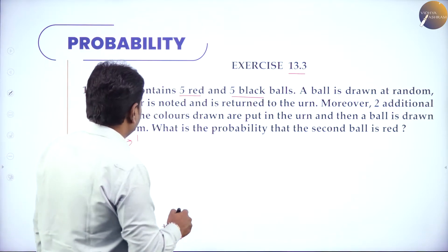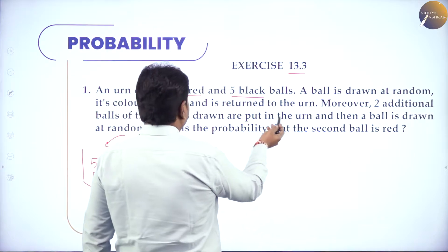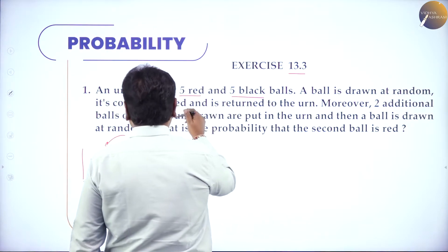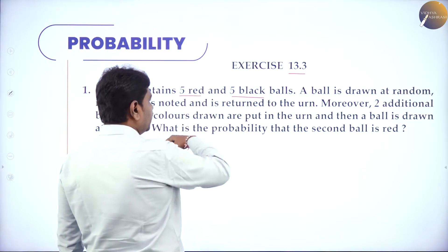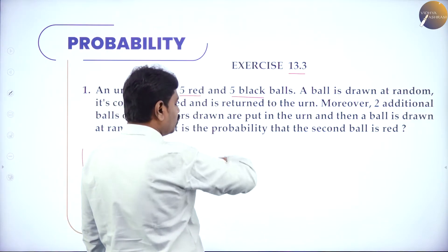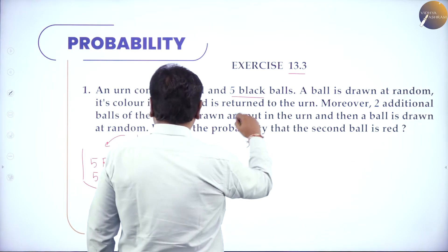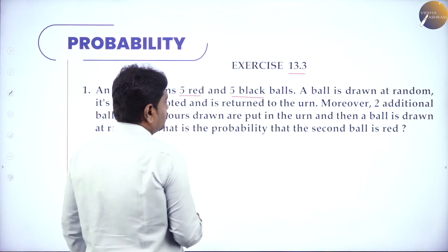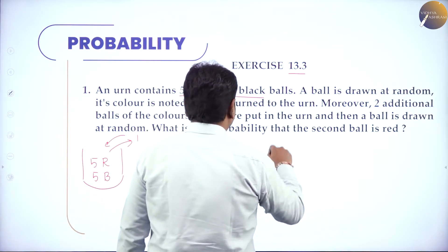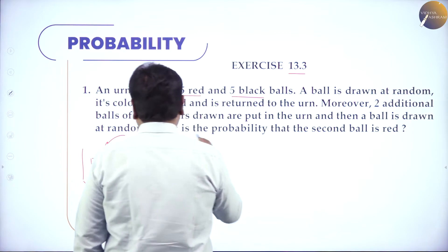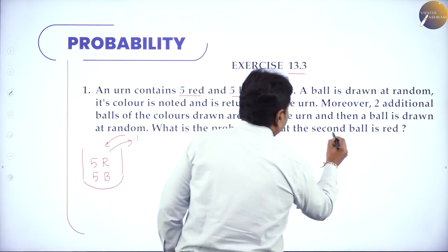Whatever you take first, you note and return it, then add two more of the same. Then a ball is drawn at random. What is the probability that the second ball is red?